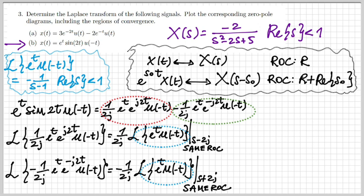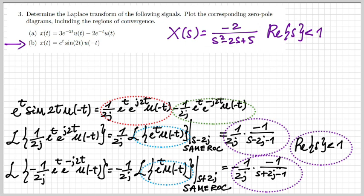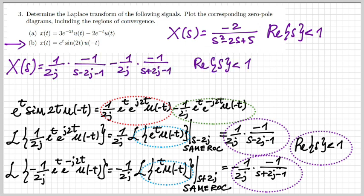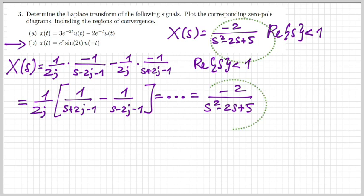Proceeding, the respective Laplace transforms are given by one over 2j and minus one over 2j multiplying minus 1/(s minus 1), evaluated at s minus 2j and s plus 2j respectively, with the same region of convergence. Summing these two transforms and performing simple algebraic manipulations, I obtain exactly the same expression as before — confirming the alternative method gives the same result.